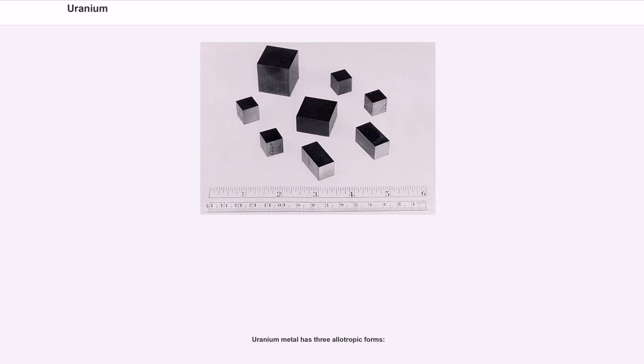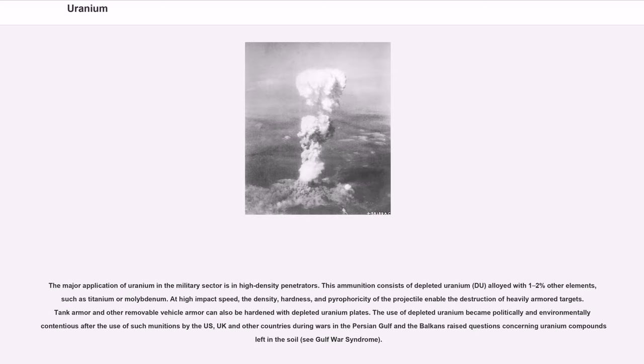Uranium metal has three allotropic forms. The major application of uranium in the military sector is in high-density penetrators. This ammunition consists of depleted uranium (DU) alloyed with 1-2% other elements, such as titanium or molybdenum. At high impact speed, the density, hardness, and pyrophoricity of the projectile enable the destruction of heavily armored targets. Tank armor and other removable vehicle armor can also be hardened with depleted uranium plates.